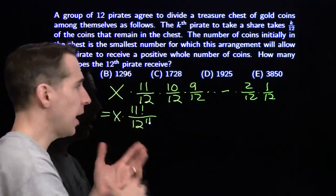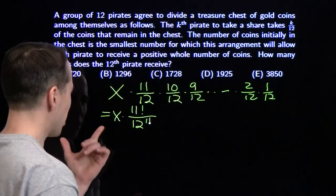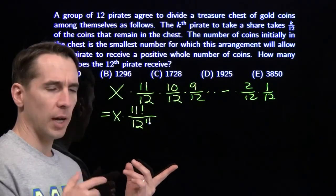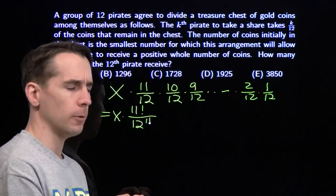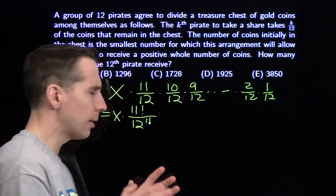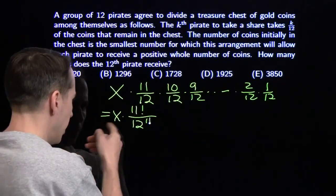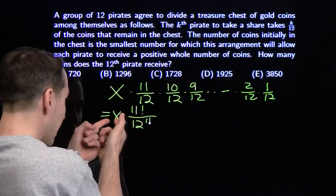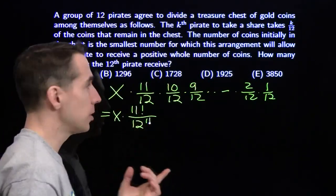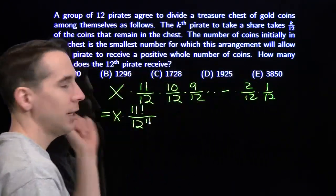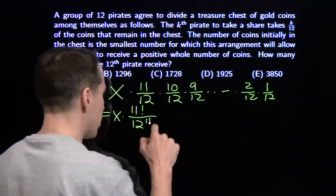X is the smallest value that makes this an integer — more precisely, the smallest value that ensures each pirate gets an integer number of coins. If you just choose X equal to 12 to the 11th, this expression comes out to be an integer. But 11 factorial is not any of the answer choices, so we need to simplify this fraction.